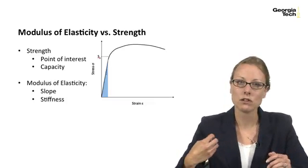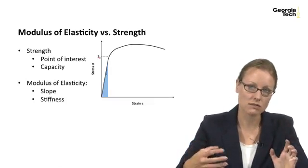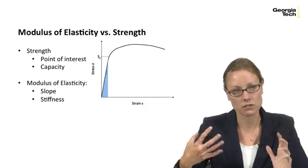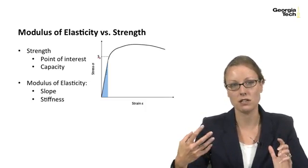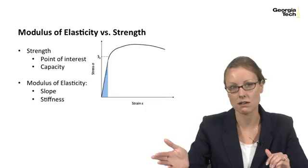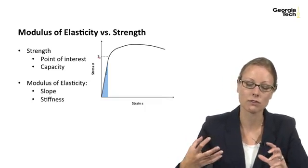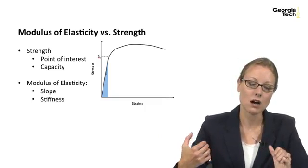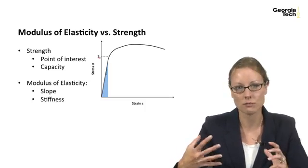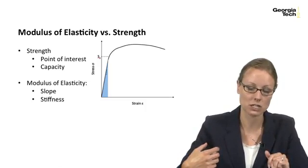It's important to understand the critical differences between the modulus of elasticity and strength. Strength is a point of interest — for example, the yield strength, past which you get permanent deformation of the material, representing the capacity of the component. The modulus of elasticity, by contrast, can be thought of as non-geometric stiffness and is the slope of the stress-strain curve.